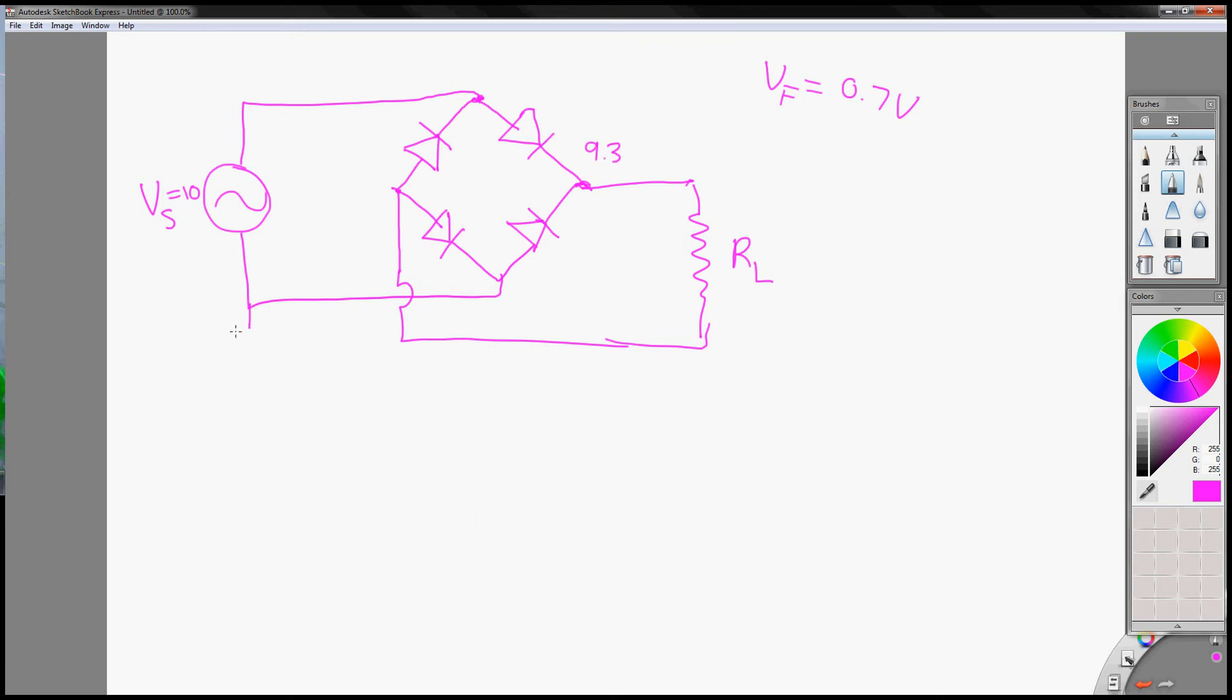And let's assume that, let's call this my reference here. So this here is actually 0.7 volts here at this point. So 10 minus, actually 9.3 minus 0.7 is 8.6. So the voltage across this right here is 8.6.